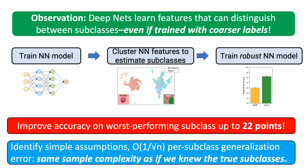Inspired by our experience with chest drains, we developed a simple theoretical model. We show that without access to the true subclass labels, our algorithm has the same asymptotic sample complexity as if we knew those true subclass labels perfectly. To be clear, this isn't a complete solution, but it demonstrates that there is something we can do about hidden stratification.